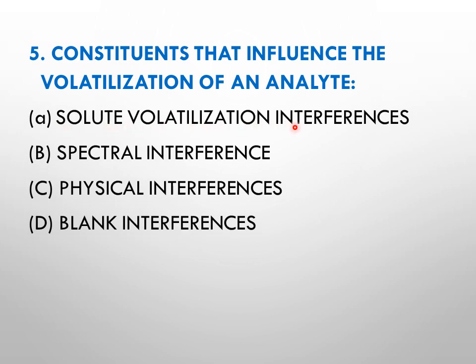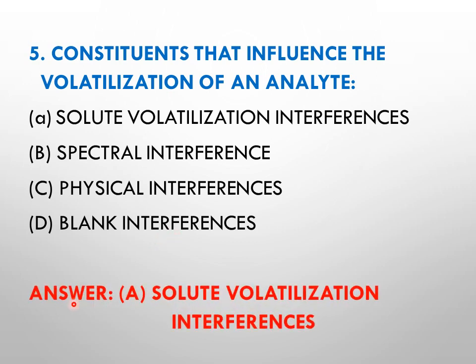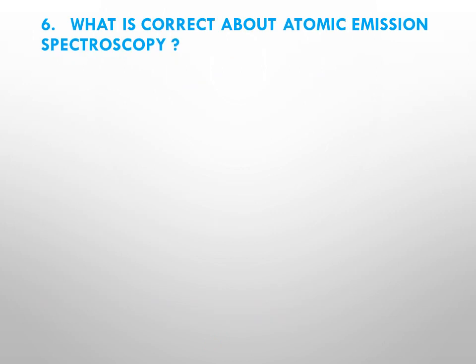The next question: constituents that influence the volatilization of an analyte are — options: A is solute volatilization interferences, C is physical interferences, D is blank interferences. The right answer is A, that is solute volatilization interferences.